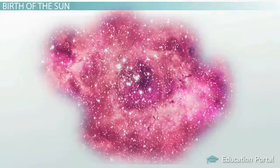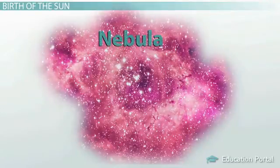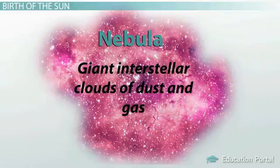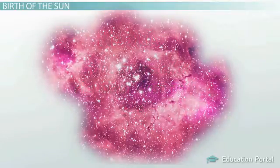Our sun's life began about 4.6 billion years ago, like any other star in the universe, in a nebula, a giant interstellar cloud of dust and gas, so far away that we would need 100,000 years to reach it. This cloud was perfectly content and quiet.